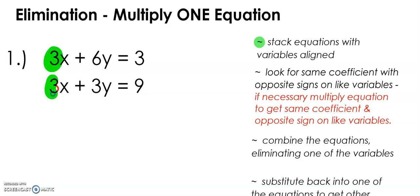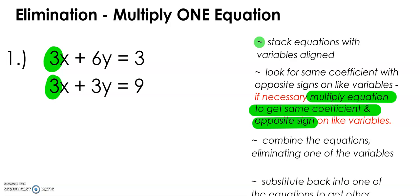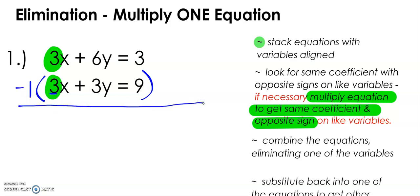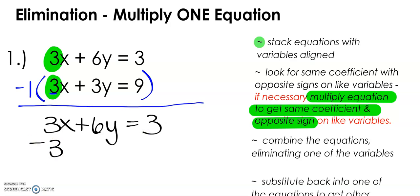Here on our x, we have the same coefficient, but we need opposite signs. The red part says to multiply one of the equations to get the same coefficient with opposite signs on the like variables. So what would I need to multiply my second equation by? You could multiply the first or the second equation. I'm going to multiply the second equation — we need to make this 3x a negative 3x. To do that, I would multiply by negative 1. So my top equation does not change: 3x plus 6y equals 3. The second equation becomes negative 3x minus 3y equals negative 9.